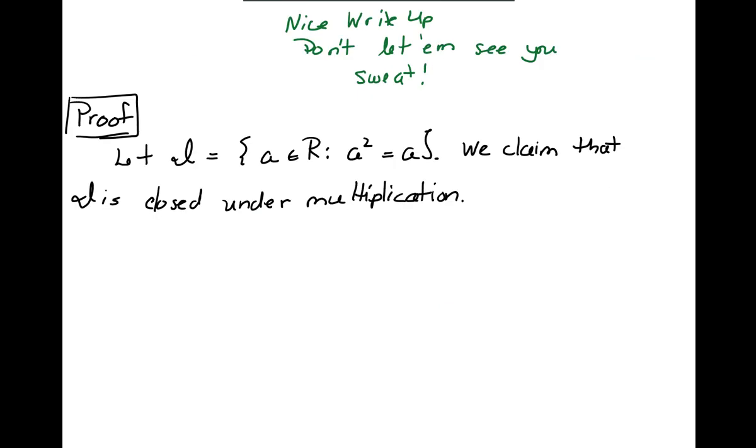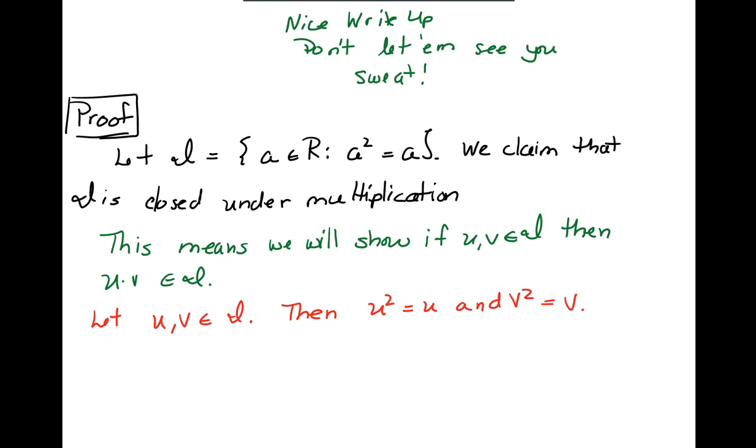So let's write this up nicely. Always seems mysterious when they come up with notation, right? We already thought this through but let I be the set of idempotent elements. We claim that I is closed under multiplication. This means we'll show if u, v belongs to I then u times v also belongs to I. Let u, v belong to I, then u squared is u and v squared is v.